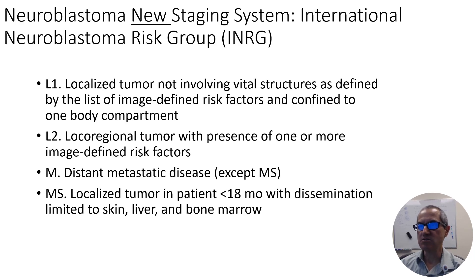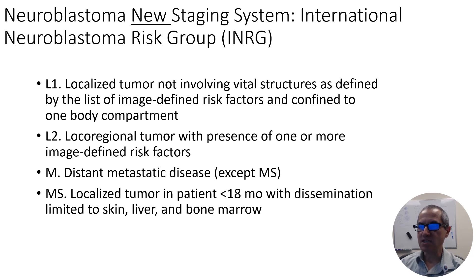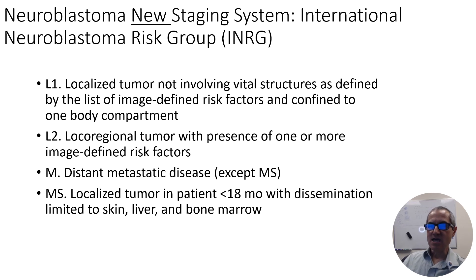This is the most recent neuroblastoma staging system, which is the International Neuroblastoma Risk Group staging. L1 is imaging-defined as a relatively easy to resect localized neuroblastoma tumor. L2 is also localized disease but with certain risk factors that make the tumor hard to resect. M-stage disease includes patients with metastatic disease, and MS-stage patients are young and have very limited metastases only to the skin, liver, or bone marrow.